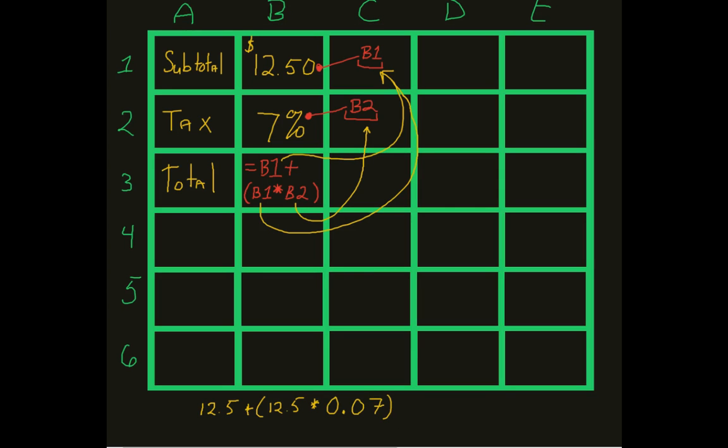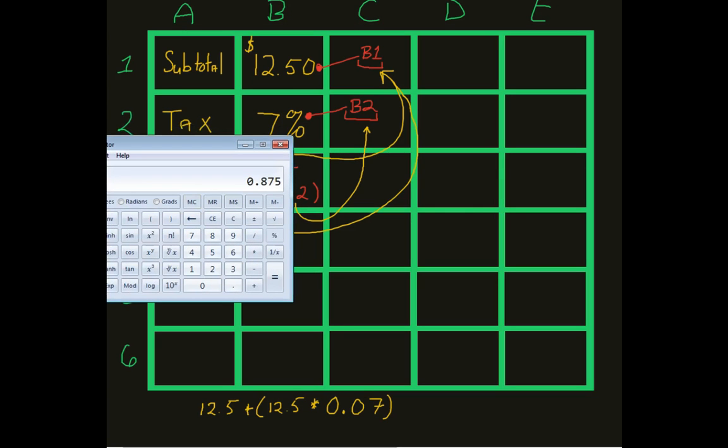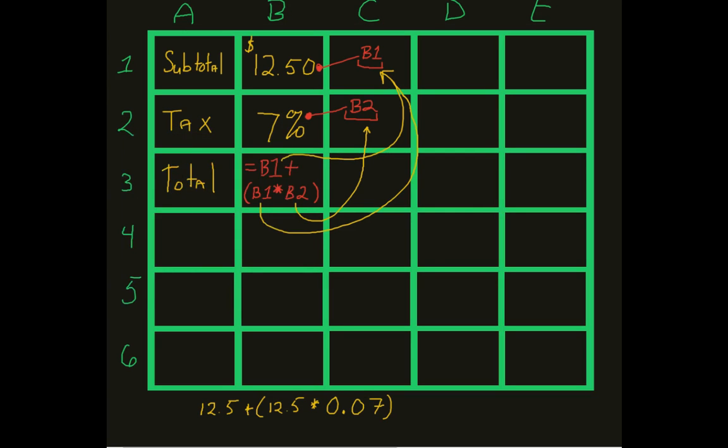Now, I am going to cheat, obviously, and that 12.5 times 0.07, not too terribly crazy. It's about 87 cents. So, this translates to 87 cents.